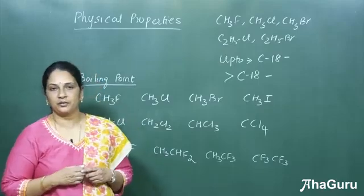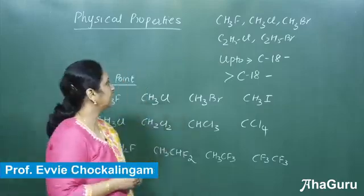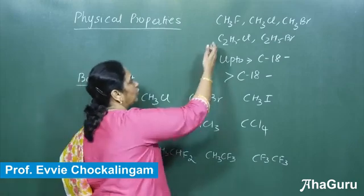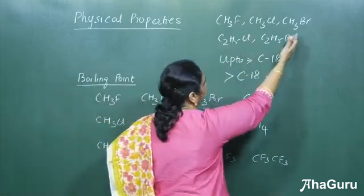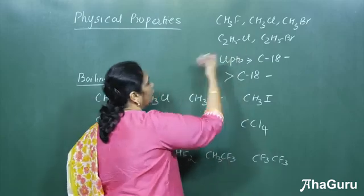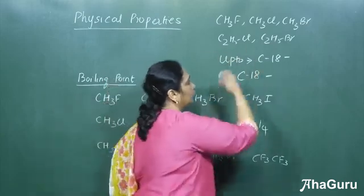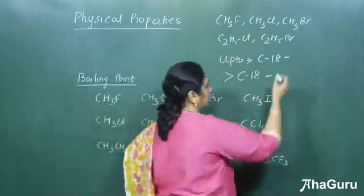We will see the physical properties of haloalkanes. Basically, compounds like fluoromethane, chloromethane, bromomethane, chloroethane, and bromoethane are all gases.